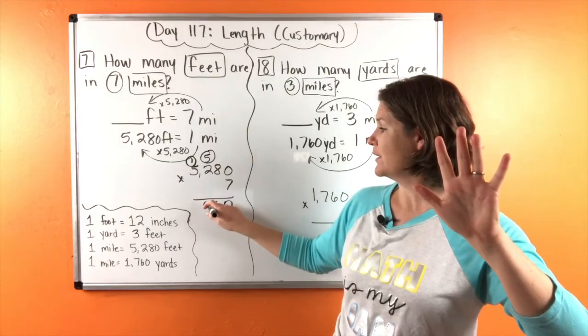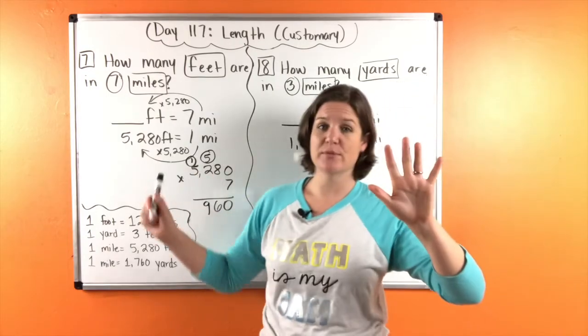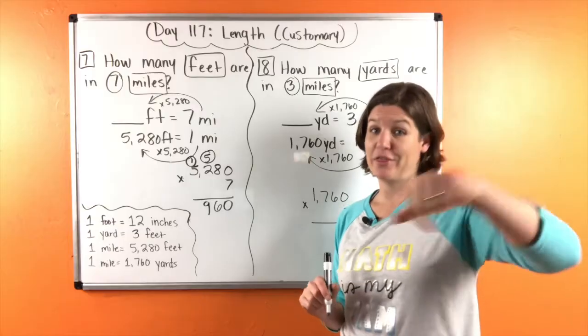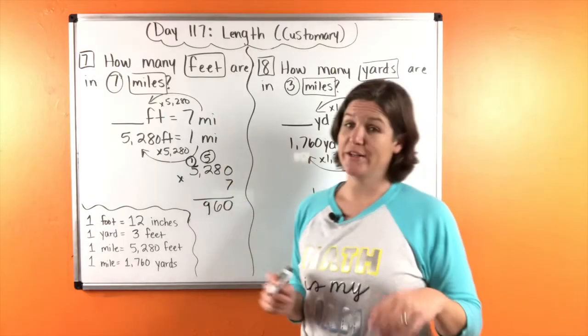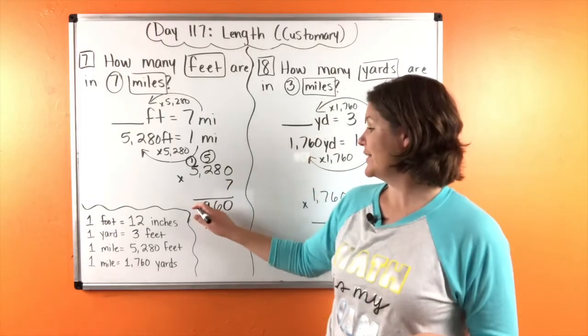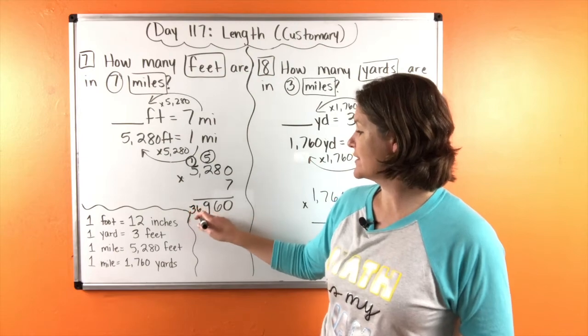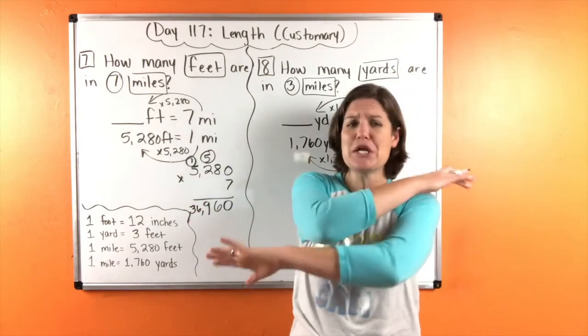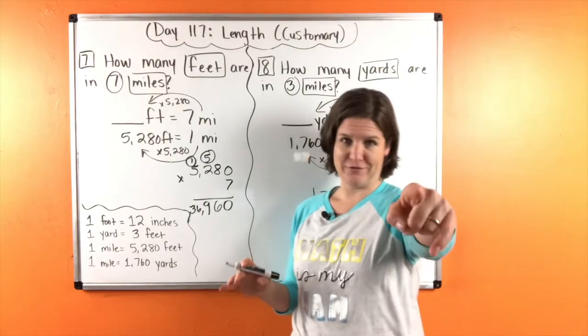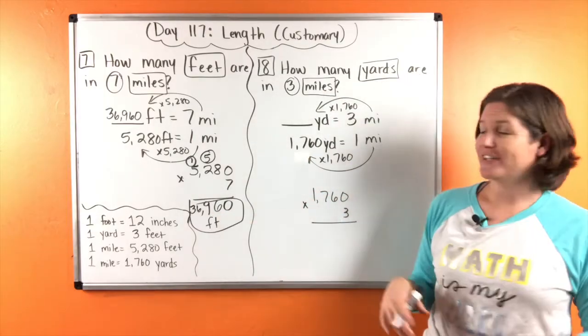Nice landing, dude. Seven times five is 35 plus one is 36. So we have 36,960 what? Feet. That's right. All right, let's take a look at number eight.